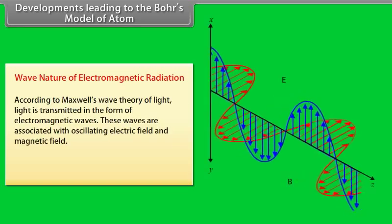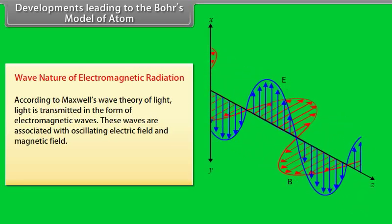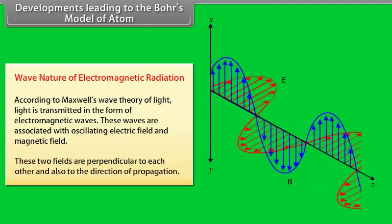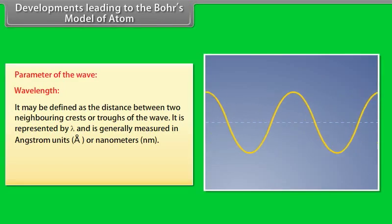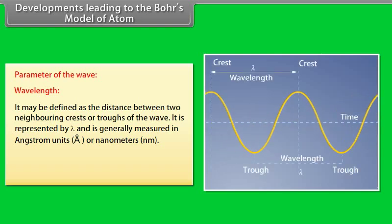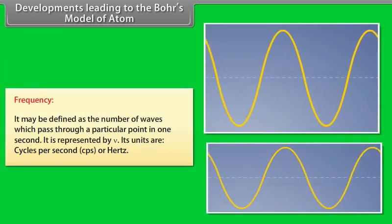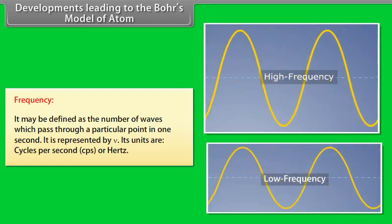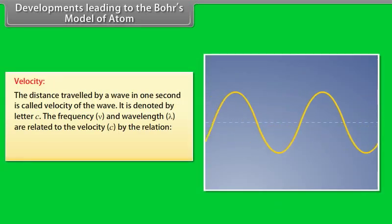Development leading to Bohr's model — Wave nature of electromagnetic radiation: According to Maxwell's wave theory, light is transmitted as electromagnetic waves with oscillating electric and magnetic fields perpendicular to each other and to the direction of propagation. Wavelength (λ) is the distance between two neighboring crests or troughs, measured in angstroms or nanometers: 1 Å = 10⁻¹⁰ m, 1 nm = 10⁻⁹ m. Frequency (ν) is the number of waves passing a point per second, in cycles per second or hertz.